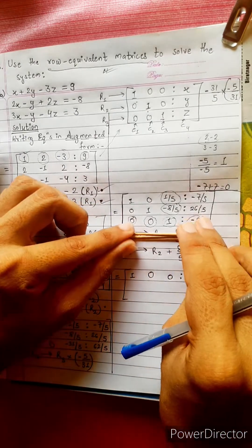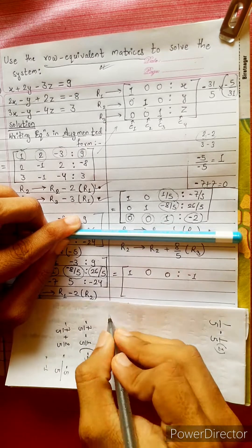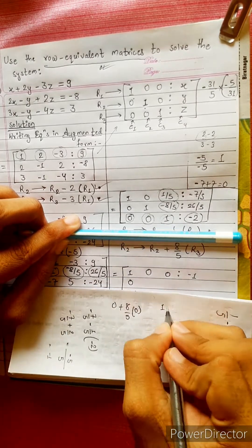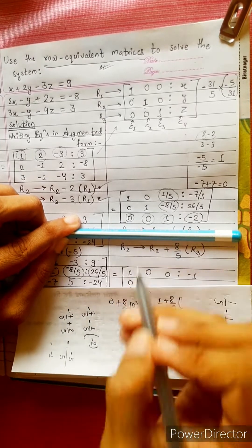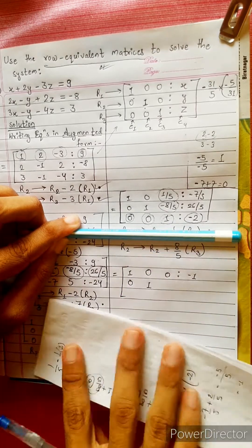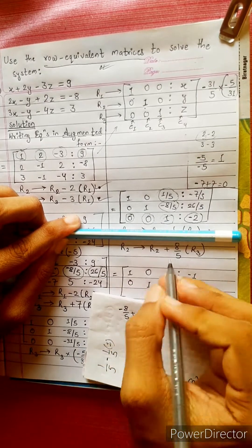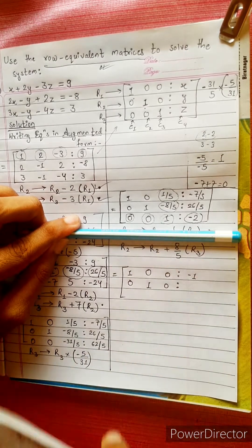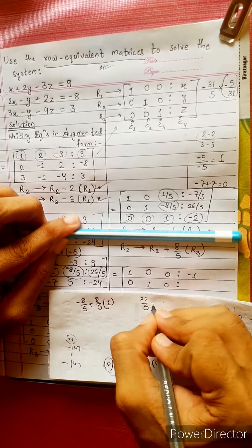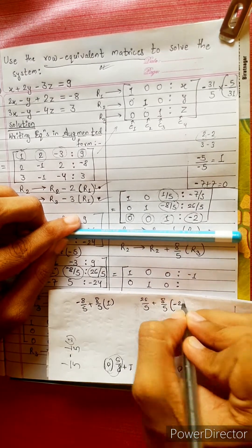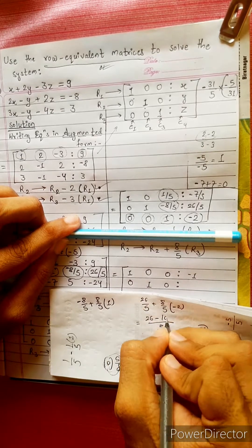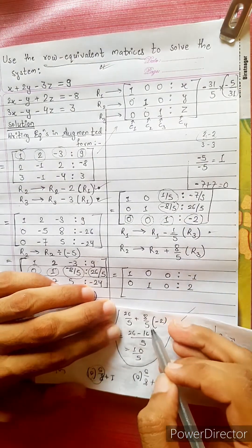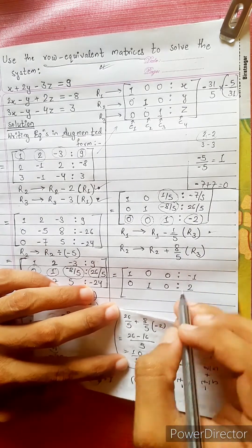Now let's go to this formula. R2 is 0, plus 8 by 5 times R3. R3 is 0, so 0 plus 0 equals 0. Then 1 plus 8 by 5 times R3 is 0, so 1 plus 0 equals 1. Then minus 8 by 5 plus 8 by 5 times R3, where R3 is 1, gives 26 divided by 5 plus 8 divided by 5 times R3. R3 is minus 2. 26 minus 8 is 16, then 10 divided by 5 equals 2. So the result is minus 2.